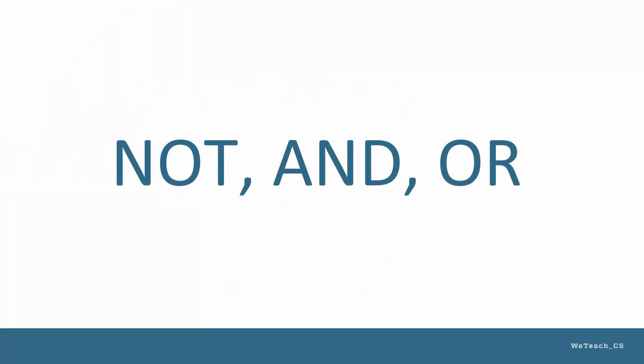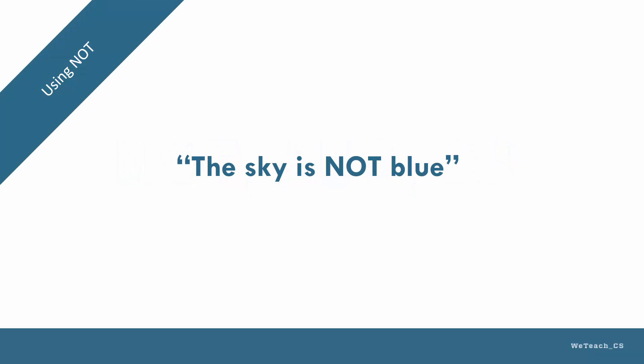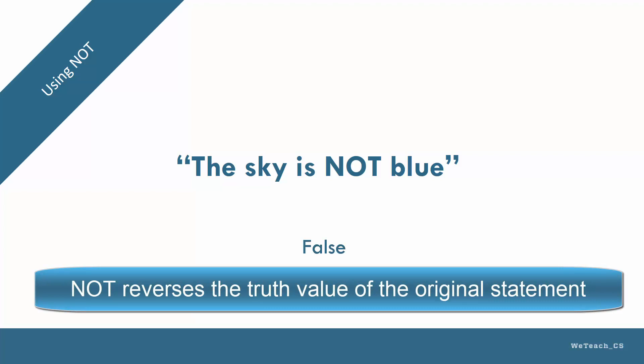Propositions can be modified using the ideas of not, and, and or. Here is an example using not. The sky is not blue. This proposition is simply stating the opposite truth value of the statement, which in this case is false.